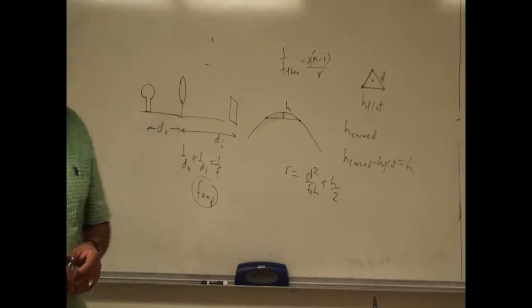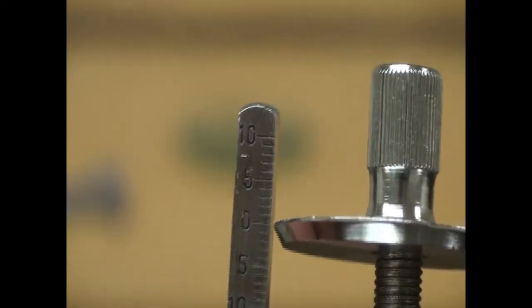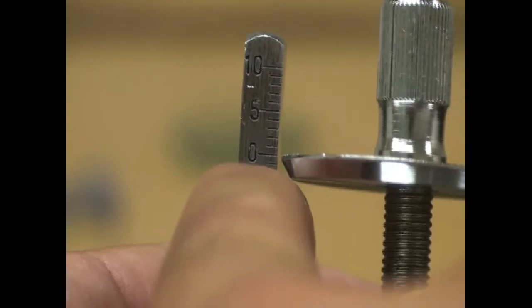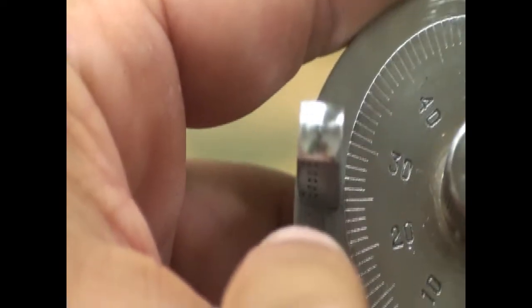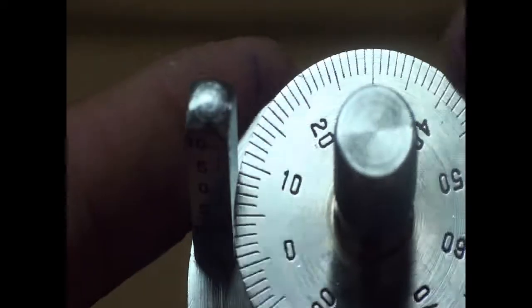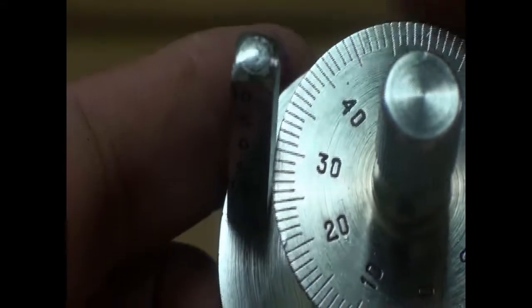I'll put the spherometer over a flat surface. Looking at the spherometer reading, the top is a little above zero — the 25 mark is matching with the rod, so that's 25 hundredths of a millimeter above zero. That is my H-flat reading: 0.25 mm.